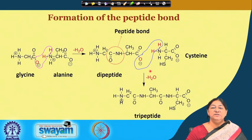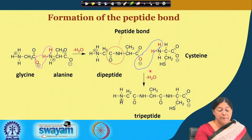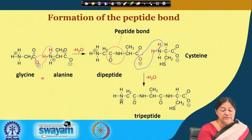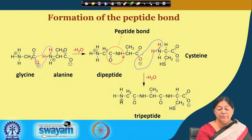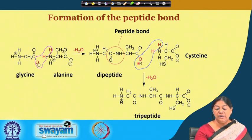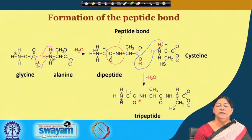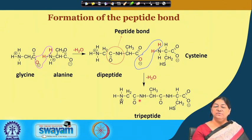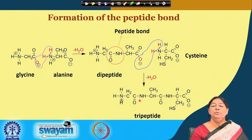If we look at specific amino acids forming a peptide bond — say glycine and alanine — we lose water to form a peptide bond with glycine and alanine side chains. If we add another amino acid residue, the cysteine residue, we form a tripeptide. Similarly, continuation of this forms a polypeptide.